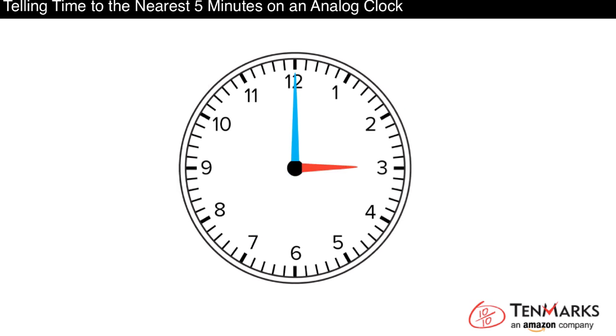When the time is exactly on the hour, like 3 o'clock, the minute hand points to the 12. That's like zero minutes passing. So to find how many minutes have passed when the hand is pointing somewhere else, start at the 12 and skip count by fives until you get to the minute hand. On this clock, start at the 12 and count...